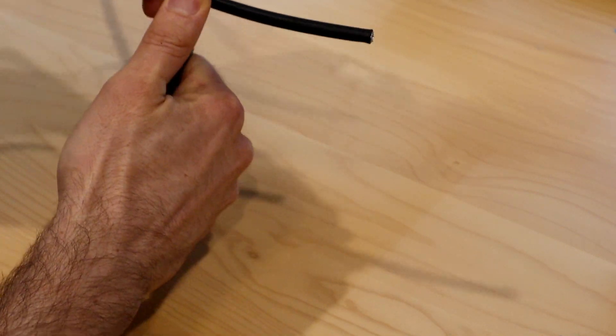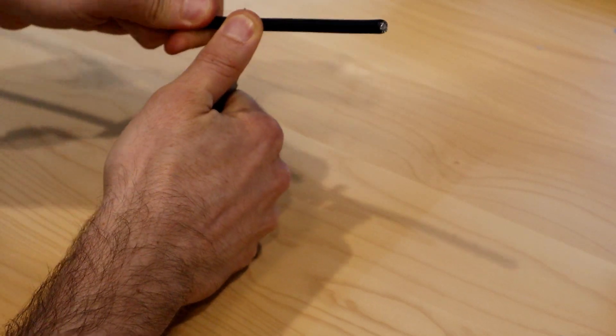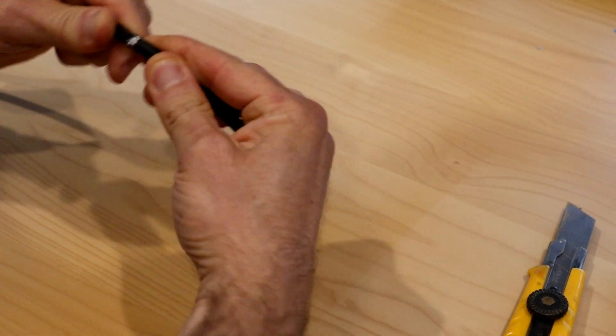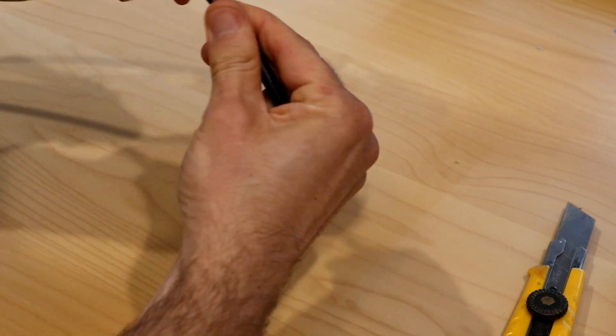The first step is to score the outer insulation carefully all around the circumference of the cable. Then bend it back and forth to break the insulation along the score line.